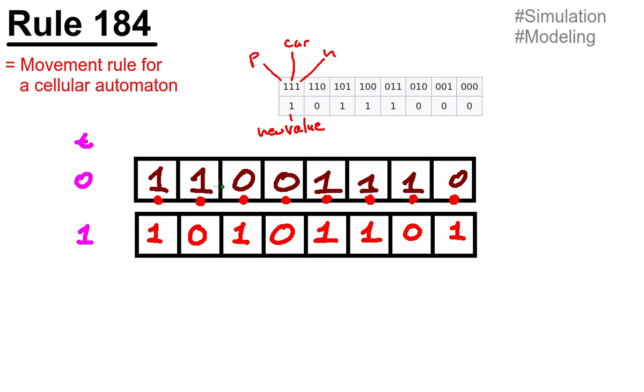If we think of these as cars, then we just simulated that a car can only move if there is a free space in front of the car. Because if you check it out, then you see that these two ones moved one field. Whereas this one did not have a free space in front, so it couldn't move. And this one and this one neither.